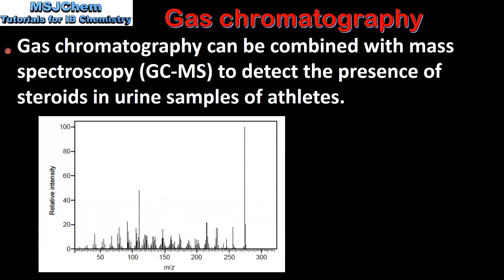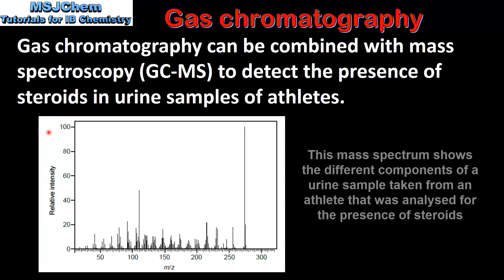Gas chromatography can be combined with mass spectroscopy to detect the presence of steroids in urine samples of athletes. Here we have an example of a mass spectrum produced using this technique.